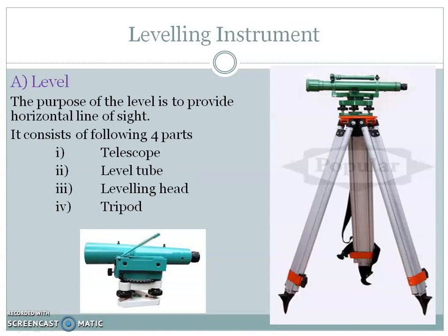The leveling instrument is called a level. It is the instrument used to find out the elevation of any point. The purpose of the level is to provide a horizontal line of sight. It consists of four parts: first is the telescope, second is the level tube, third is the leveling head, and fourth is the tripod.